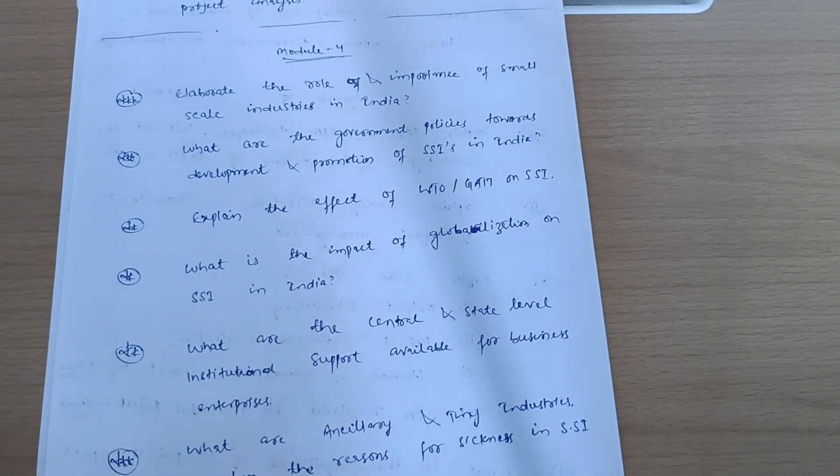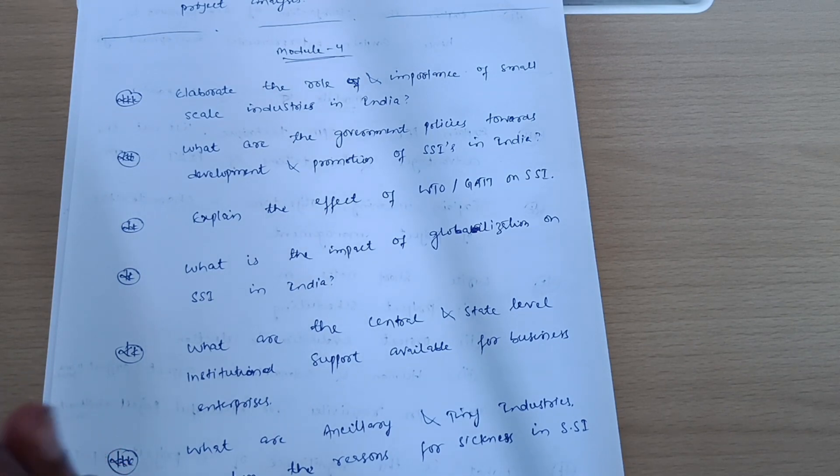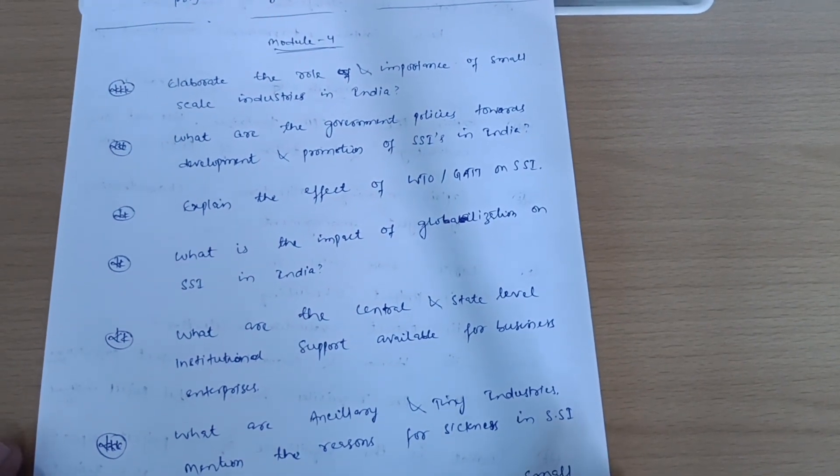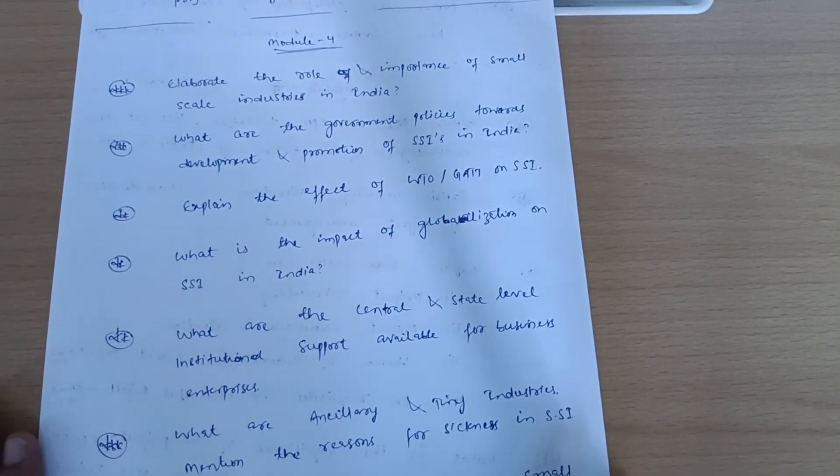So these are the important questions, super important questions from the Management and Entrepreneurship subject. You should try to write down the answers in A4 sheets for these particular type of questions. No matter if you get the answers from ChatGPT itself, that is also useful in the examination. Main thing is to remember the key points and try to understand the concepts from those key points, and you have to write down in your own words.